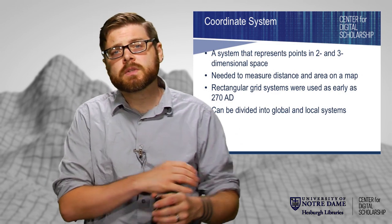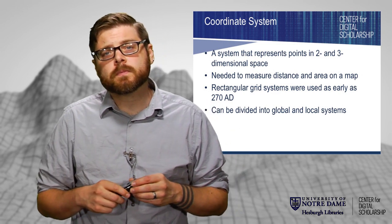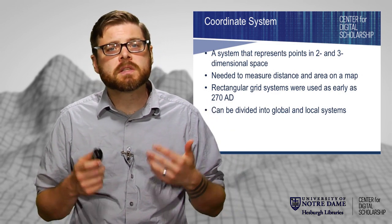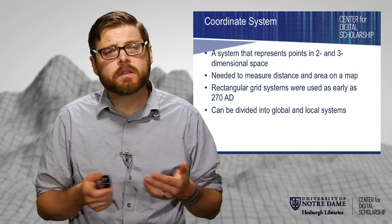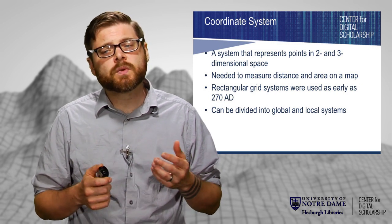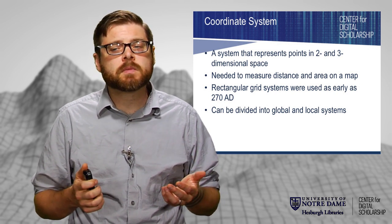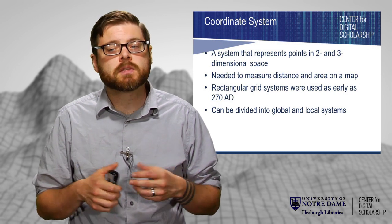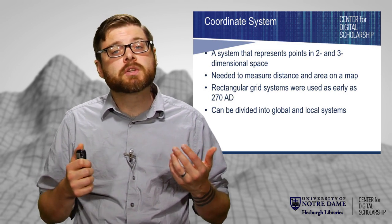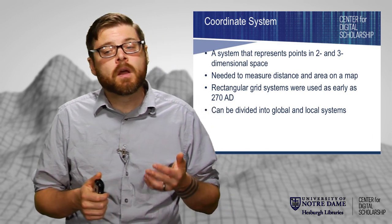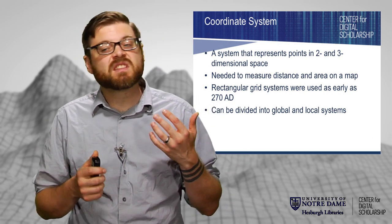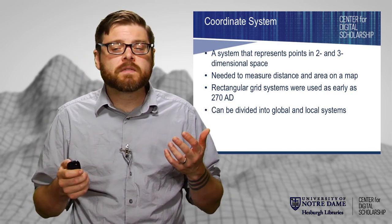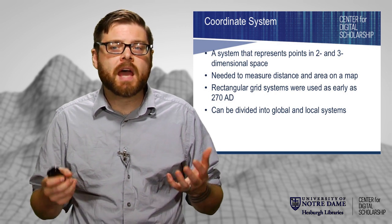The way we do this is by using coordinate systems. We're all used to thinking about coordinate systems — essentially latitude and longitude, and a few other coordinate systems as well. It's really any system that represents points in two and three dimensional space. We need this to be able to measure distance and area on maps, and these have been around for a really long time. We can divide them into two big categories.